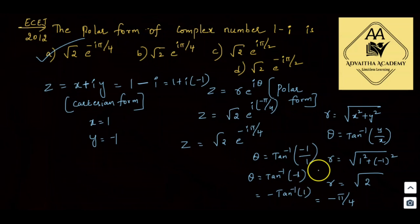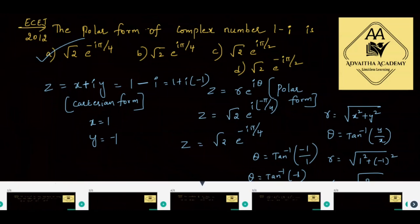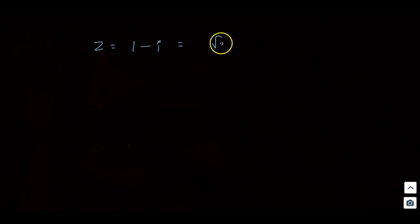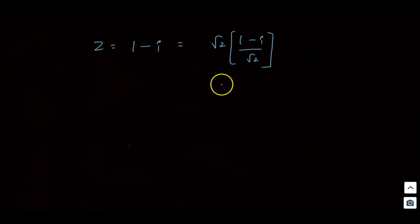Using formulas is the quick way. If you use the normal procedure it takes longer. In the normal procedure, for z equals 1 minus i, we multiply and divide by root 2, giving root 2 times (1 by root 2 minus i times 1 by root 2).